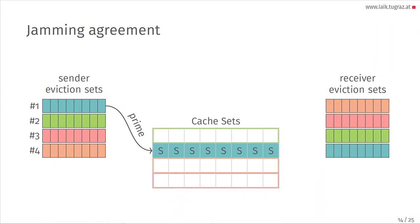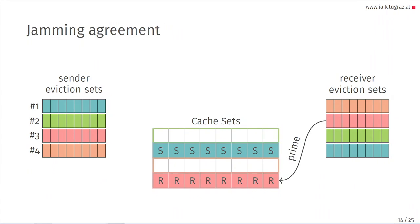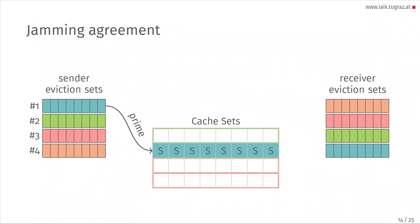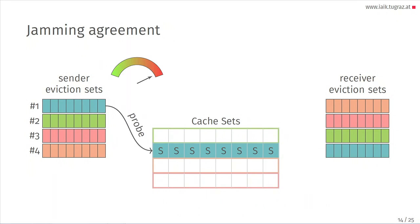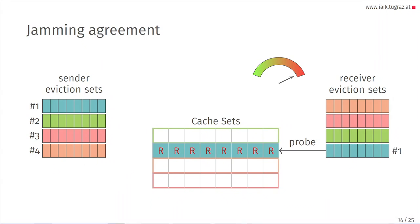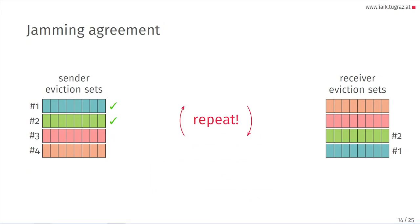They keep trying different combinations. When the sender primes its first eviction set and the receiver tries its fourth set, they finally land in the same cache set. The receiver evicts all lines of the sender, so the sender's probe is a slow access — they know they agreed. The receiver's probe is also slow since its lines were evicted by the sender. So now they have their first agreed label. They repeat this process for all cache sets until they've agreed on all channels.